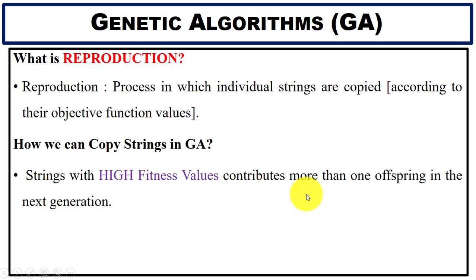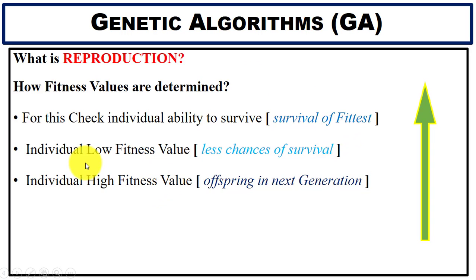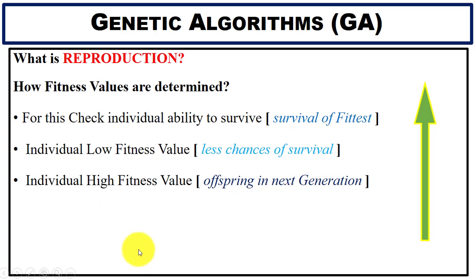How is fitness value determined? Using the biological concept of survival of the fittest, we check each individual's ability to survive. If an individual has a low fitness value, there are fewer chances of survival. If an individual has a high fitness value, it produces offspring in the next generation.